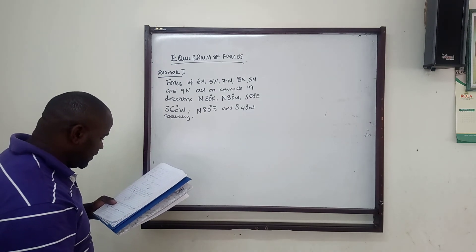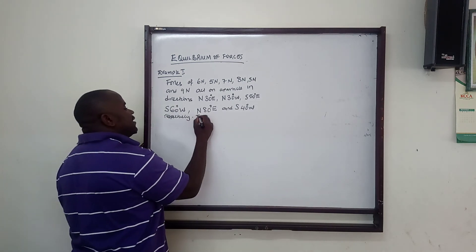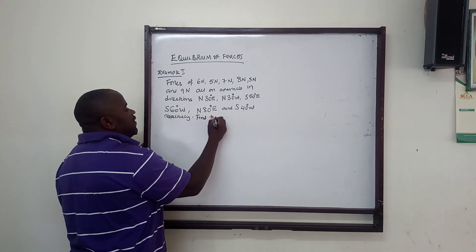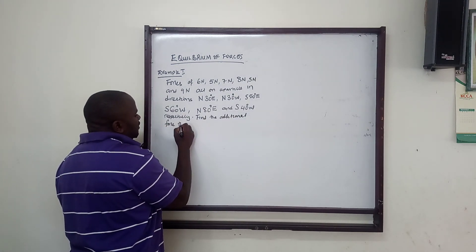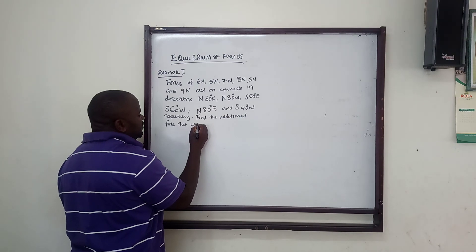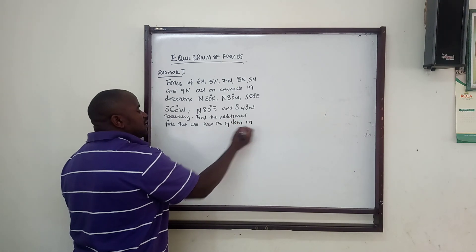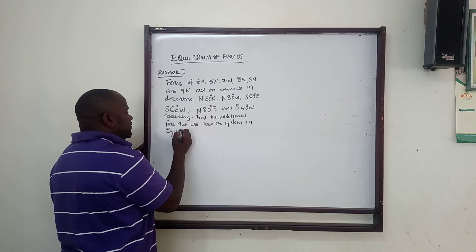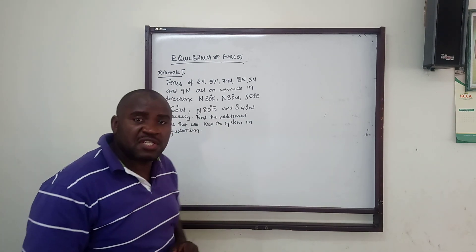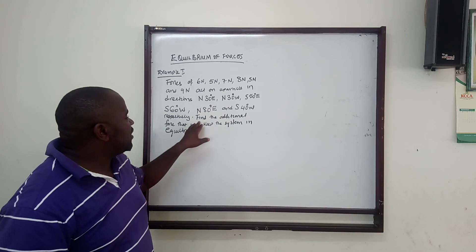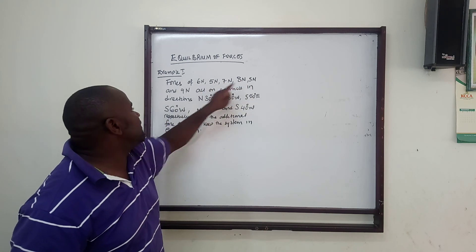Find the additional force that will keep the system in equilibrium. This means the system is not currently in equilibrium, and we need to find the additional force that can be added to the six given forces — 6, 5, 7, 8, 5, and 9 newtons — to achieve equilibrium.